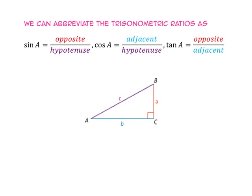We can abbreviate the trig ratios as: sine of A equals the opposite over hypotenuse, cosine of A equals adjacent over hypotenuse, and tangent of A equals opposite over adjacent.